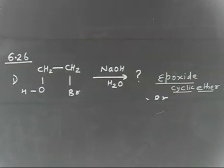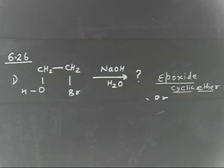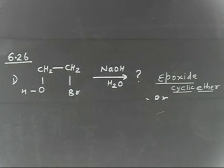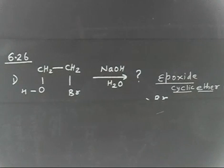Let me give you some more hints. OH⁻ will act as a base — it will take H⁺ and generate a nucleophile, which can then do an intramolecular SN2 reaction. So the first step is acid-base, and the second step is intramolecular SN2. Now you can write the product.